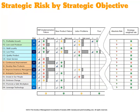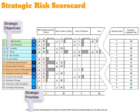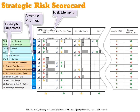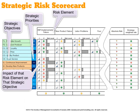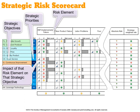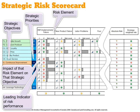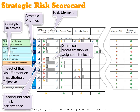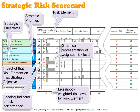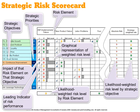The risk scorecard provides the ability to translate risk into specific actions and enables leadership to make decisions in a more strategic way. In summary: down the left we have strategic objectives and their priorities; across the top are the risk elements from the risk register; we capture each risk element's impact on each strategic objective; a leading indicator shows whether that risk is beginning to occur based on current performance; a graphical representation shows the risk level. Adding down gives a likelihood-weighted risk level by risk element; adding horizontally gives a likelihood-weighted risk level by strategic objective.